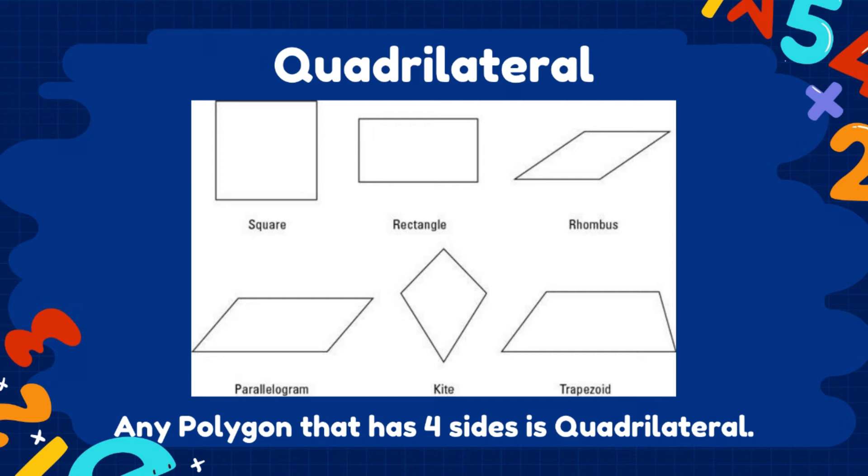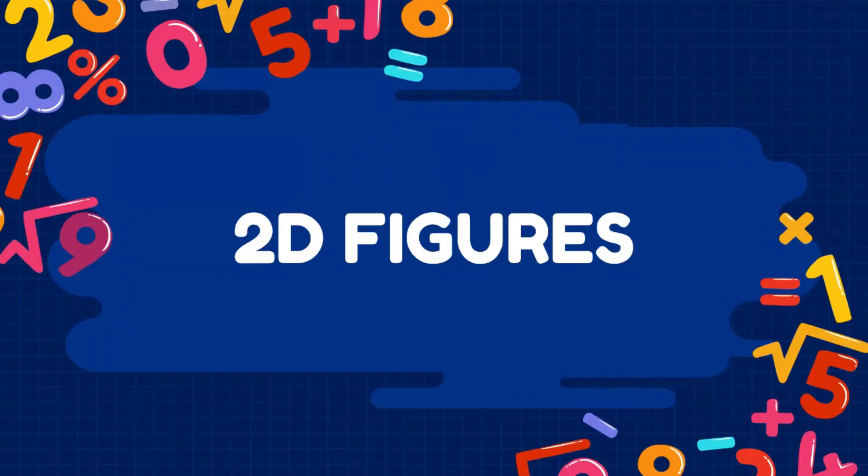Meanwhile, quadrilateral is a polygon that has 4 sides and there are many shapes that has 4 sides. We have the square, rectangle, rhombus, parallelogram, kite, and trapezoid. So those are the names of a polygon. In teaching the 2D figures, we can have activities that involves identifying the names of the polygons including the types, or drawing regular and irregular polygons, and concave and convex polygons.